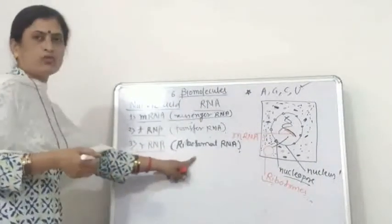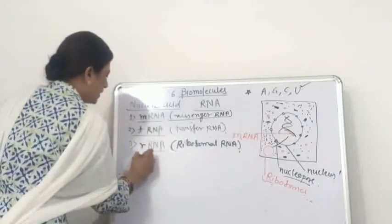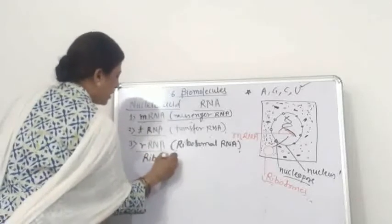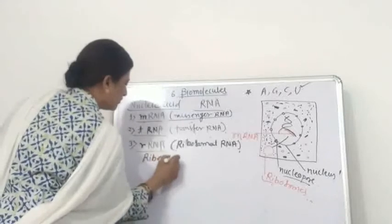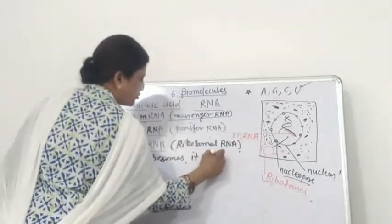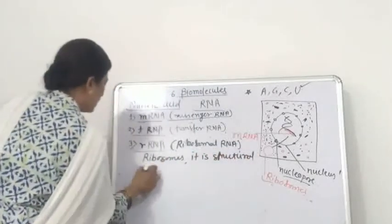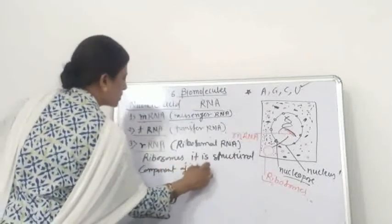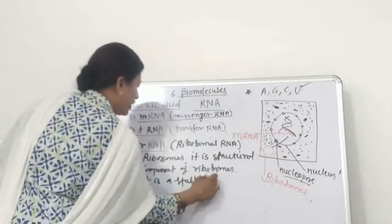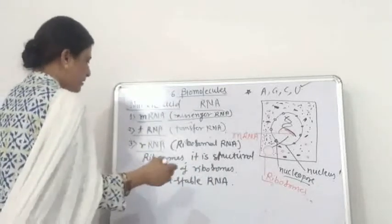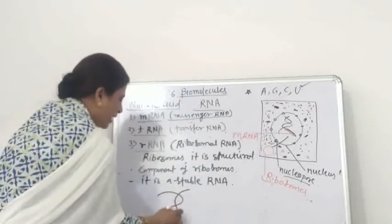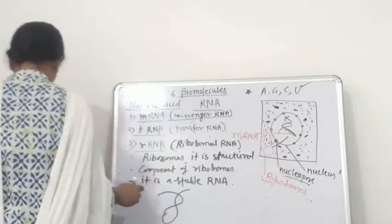The next type of RNA is ribosomal RNA, rRNA. This ribosomal RNA is present inside the ribosomes. It is the structural component of ribosomes. It is a stable RNA because at some regions it is folded to form a looped structure.